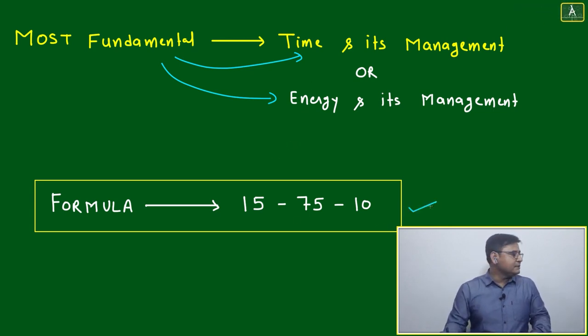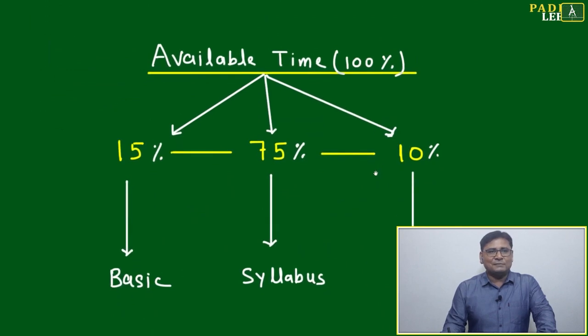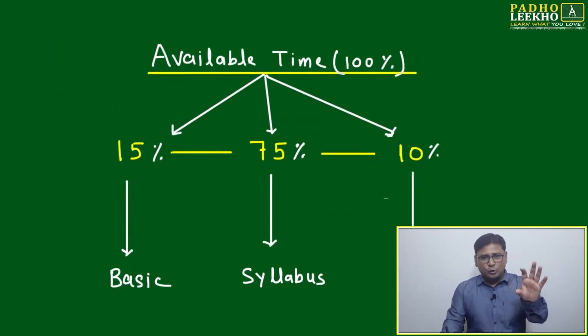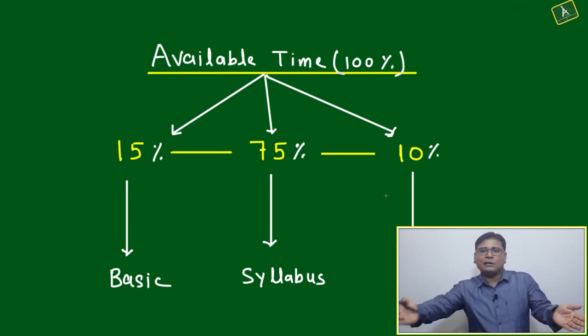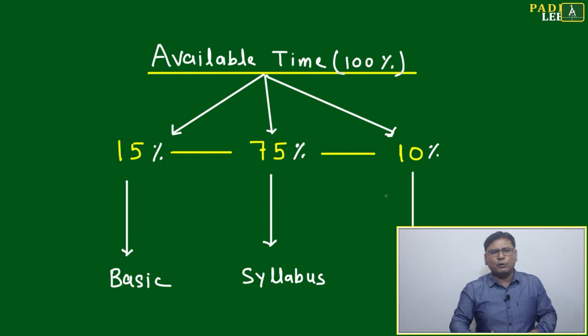For this, your formula will be 15-75-10. This formula is given in percentage because if you count in absolute numbers it will be confusing, as people start preparation at different times. Whenever you're starting preparation, any work, or any project, take 100% of your available time and convert it into three parts. This is applicable for anything.